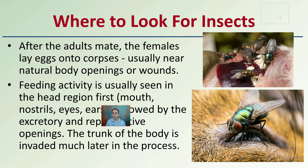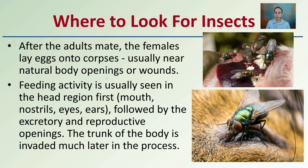Lastly, where to look for these insects. After the adults mate, the females usually lay eggs onto the corpse near natural body openings or wounds. Feeding activity is usually seen in the head region first — the mouth, nostrils, eyes, or ears — followed by the excretory and reproductive openings. The trunk of the body is invaded much later in the process. Keep in mind the type of insect you're looking at as well as the temperature in the area, as all of that will influence the ability to pinpoint with the greatest degree of accuracy the original time of death.